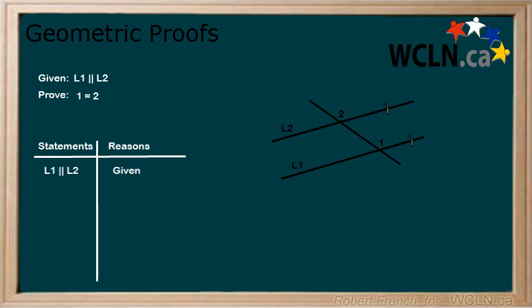Now, normally there would be a series of statements and reasons as we work towards what we are trying to prove. But for this example, it is actually our next step that is the last step. We can state that angle one equals angle two, and for the reason, we write corresponding angles of parallel lines. We write this because we know that line one and line two are parallel from the given statement.